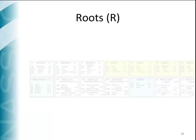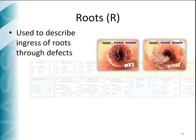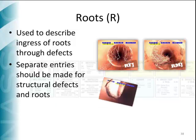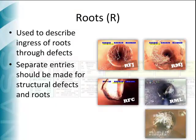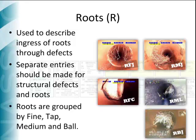The roots group of codes is used to record the various types of roots found inside a sewer. Roots often intrude through the defects along the pipe wall. Where there is a structural defect that enables root entry, as in the case of a fractured pipe or defective break-in tap, separate entries for both the structural defect and the roots should be made. Roots can be further classified as fine, tap, medium, and ball.